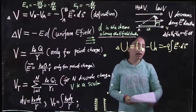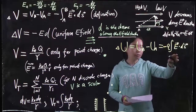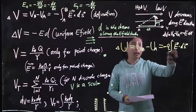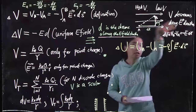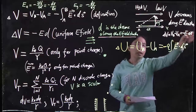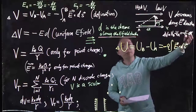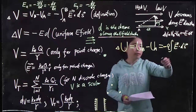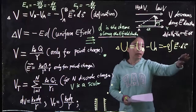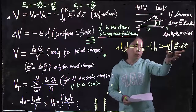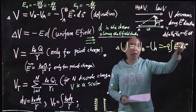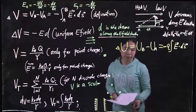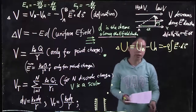When the E field does negative work — when you are moving not along the direction of the E field, when a positive charge is moving against the E field — then this becomes positive. You are increasing your potential energy.